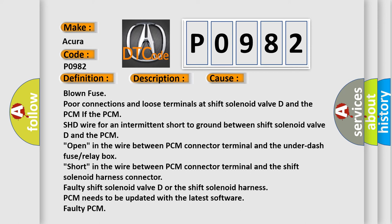Open in the wire between PCM connector terminal and the under-fuse/relay box. Short in the wire between PCM connector terminal and the shift solenoid harness connector. Faulty shift solenoid valve D or the shift solenoid harness. PCM needs to be updated with the latest software. Faulty PCM. The airbag reset website aims to provide information in 52 languages.